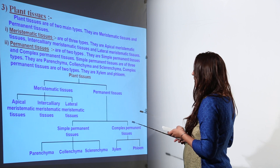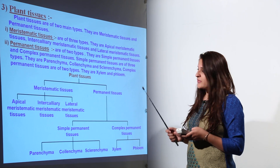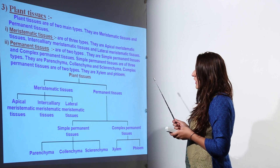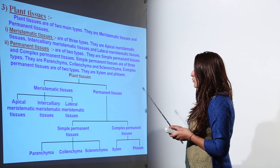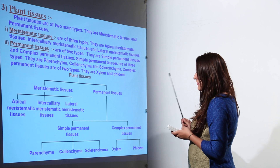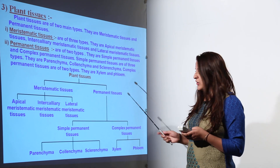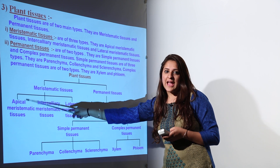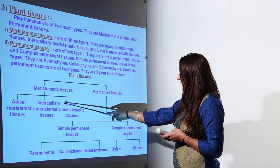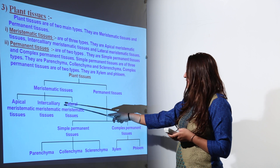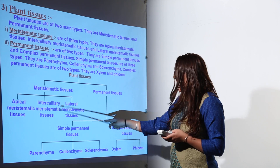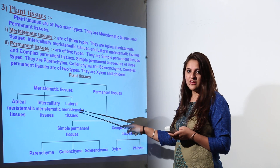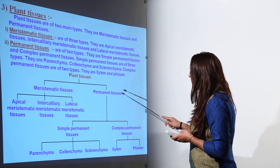Moving on to plant tissues — plant tissues are of two main types: meristematic tissue and permanent tissue. Meristematic tissues are further divided into three categories: apical meristematic tissue, present in the apical area; intercalary meristematic tissue, present in the intercalary regions; and lateral meristematic tissue, present in the lateral regions of stems and roots.